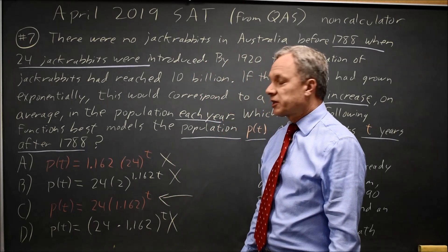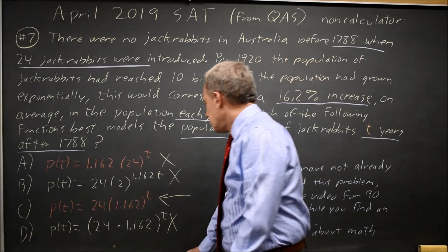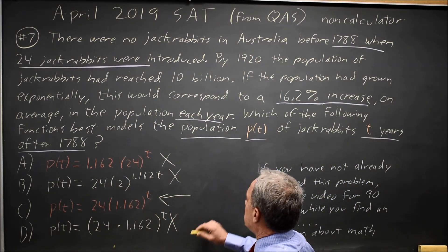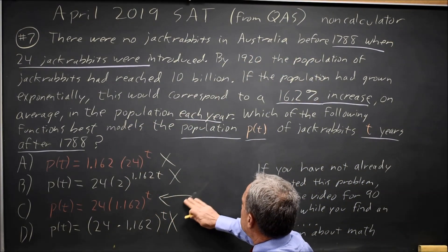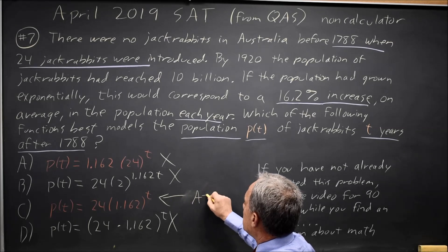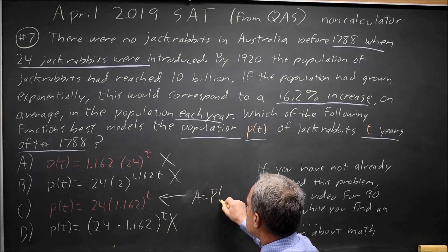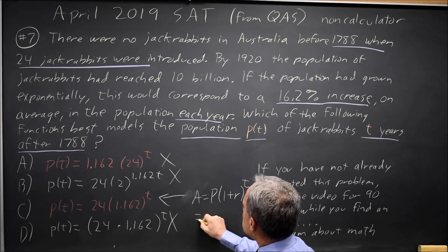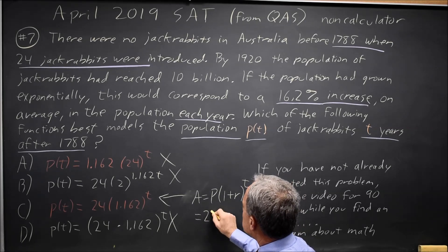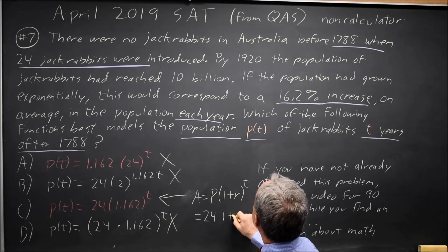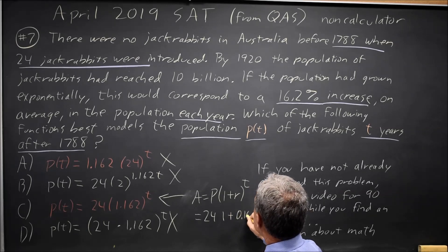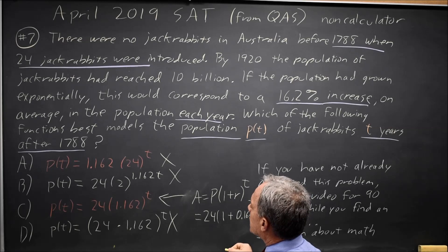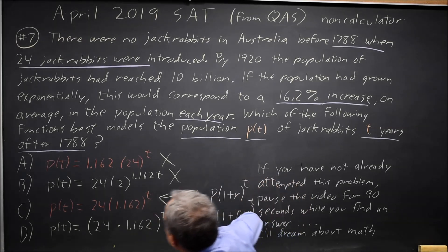The correct answer has to be C. If you recognize the equation for annual growth, your amount equals your starting population or principal times 1 plus R to the T. In this case, since your starting population is 24, that's 24 times 1 plus 0.162 to the T, and that is the equation they gave us in choice C.